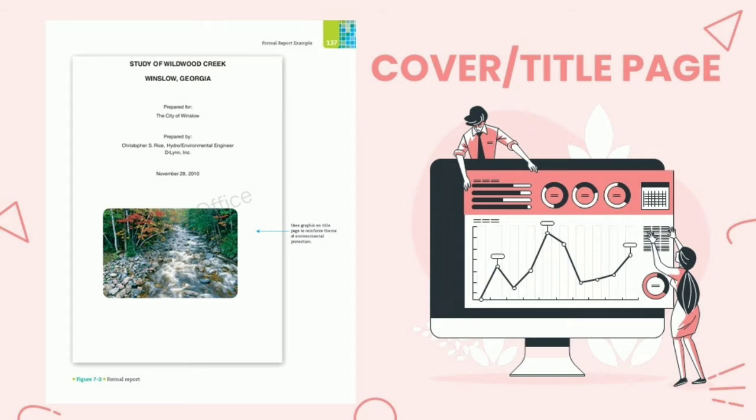The cover or title page should include four pieces of information: first, the project title exactly as it appears on the letter or memo; second, your client's name; third, your name or the name of your organization; and fourth, the date of submission. To make the title page distinctive, you may place a simple illustration, but do not clutter the page — use visuals only if they reinforce a main point and can be done simply and tastefully.